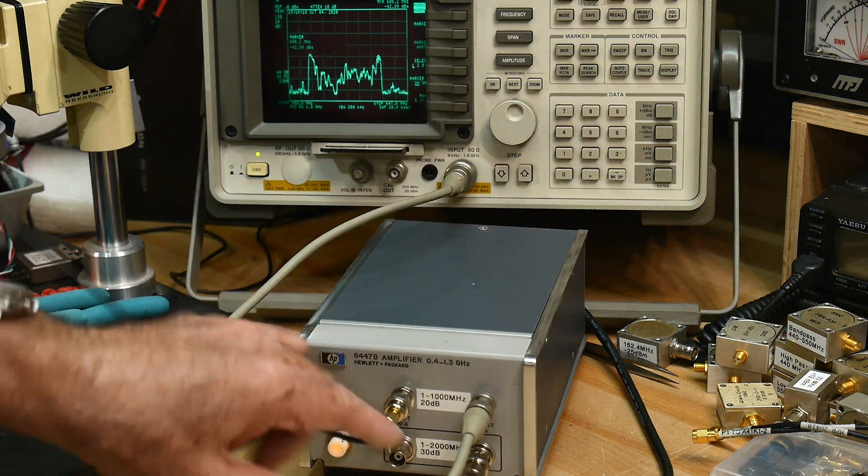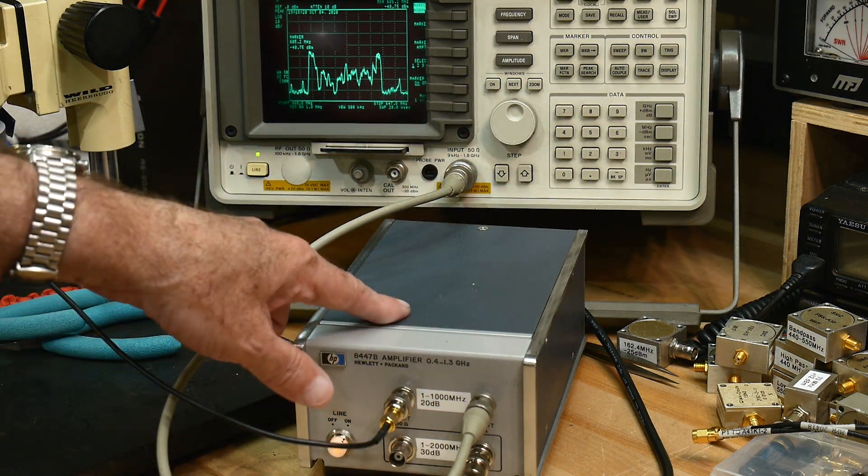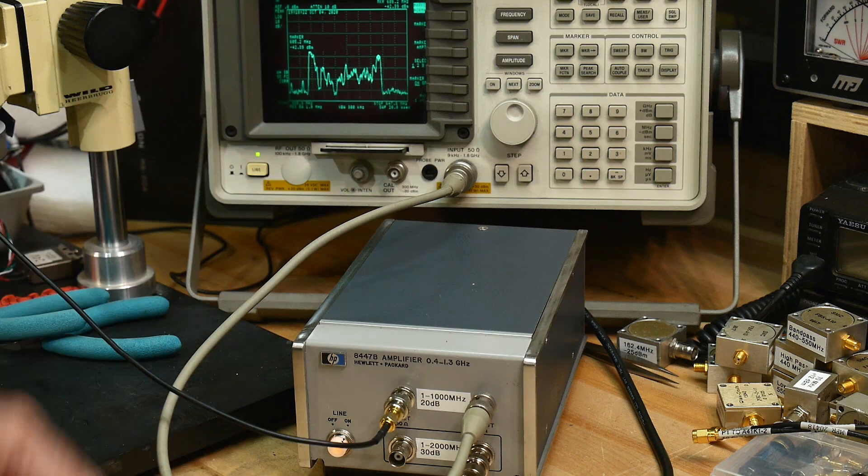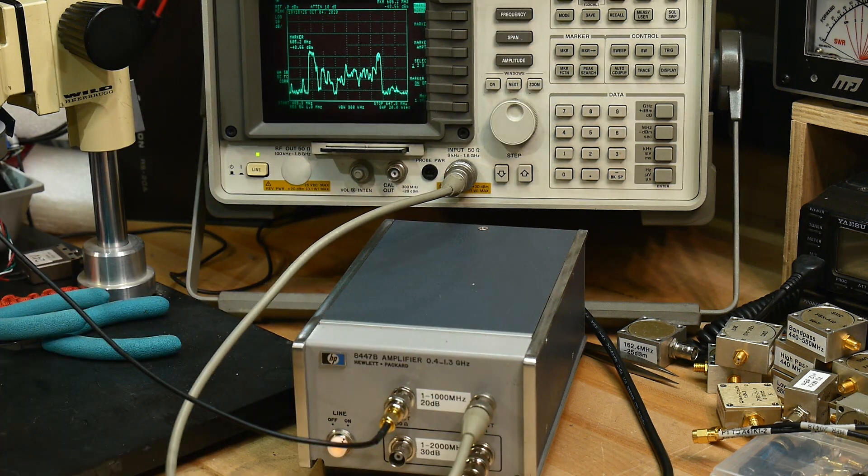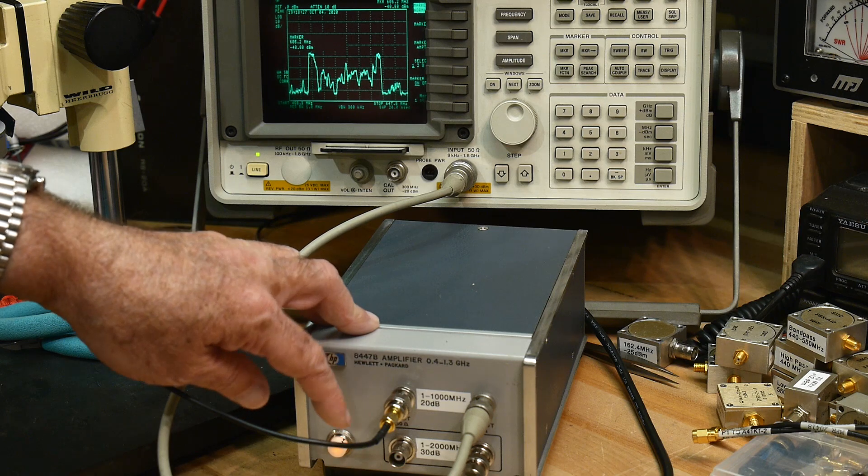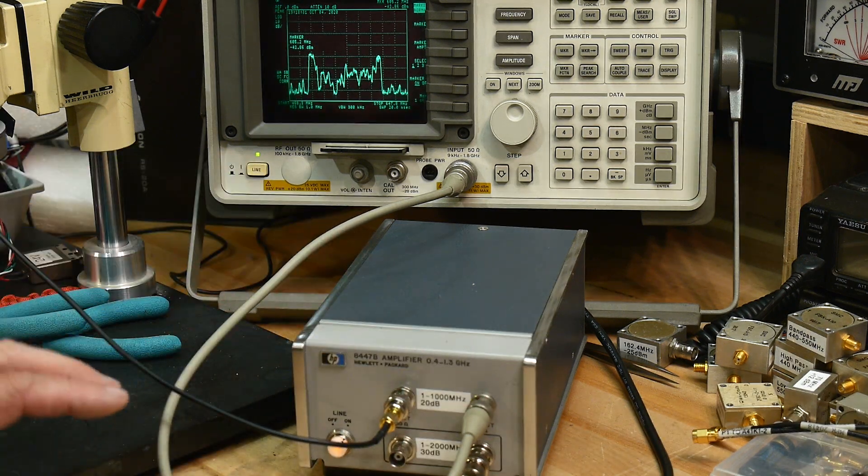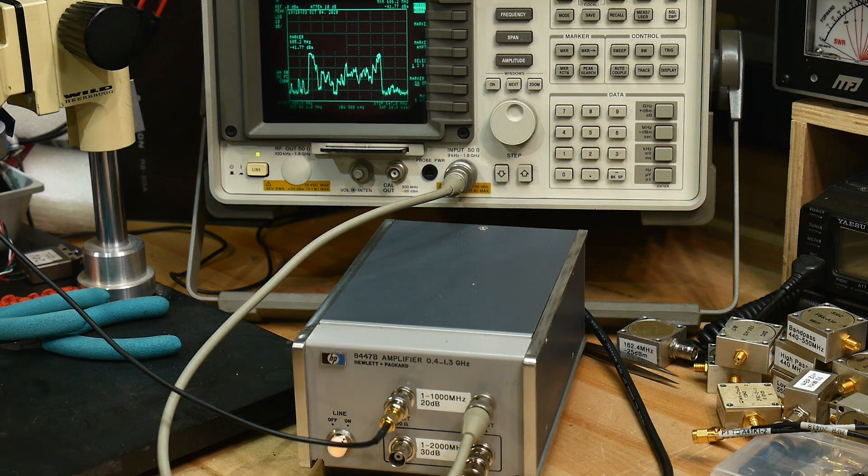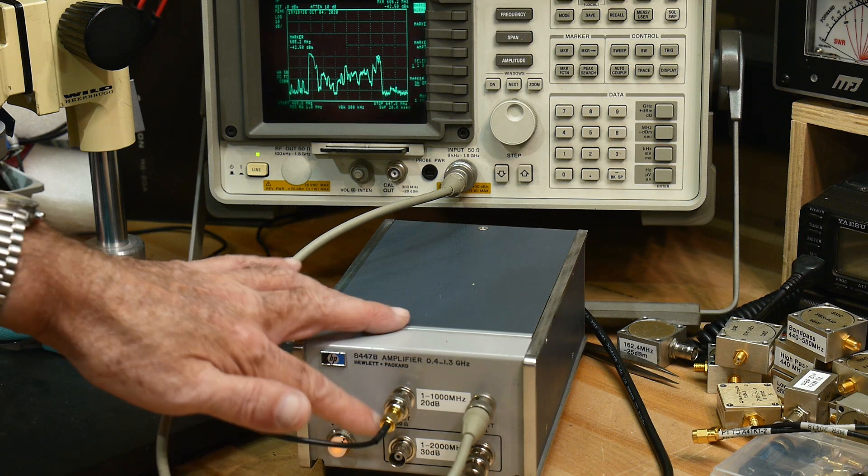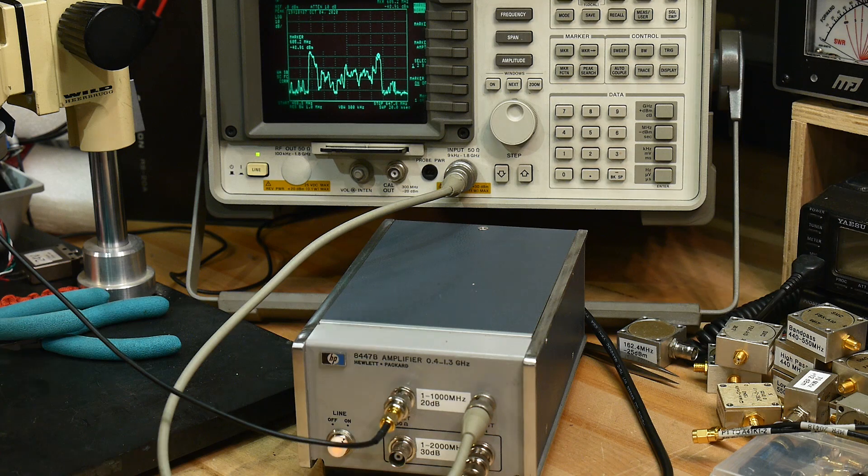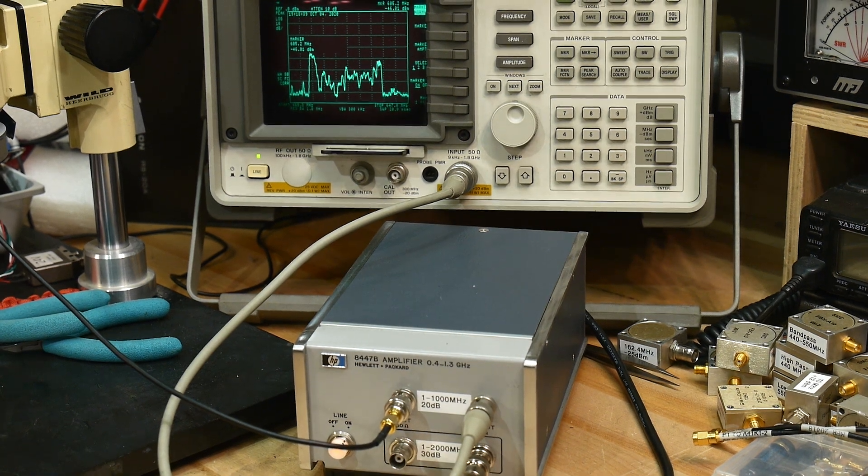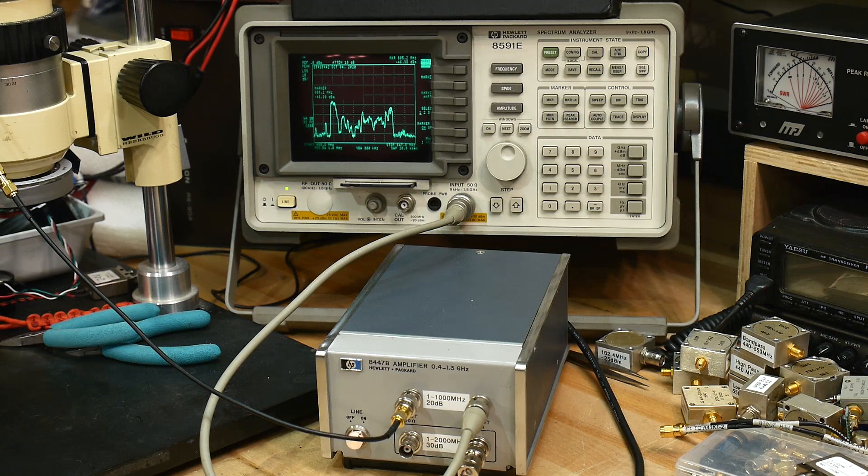I've got two different amplifiers in this box. I've got one that's 20 dB. I used to have a 60 dB in there and I think I blew it up or it was oscillating. I didn't like it, so I took out the 60 and put in a 20 that has lower noise performance. The bottom one here is a 30 dB.